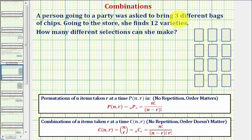A person going to a party was asked to bring three different bags of chips. Going to the store, she finds twelve varieties. How many different selections can she make?